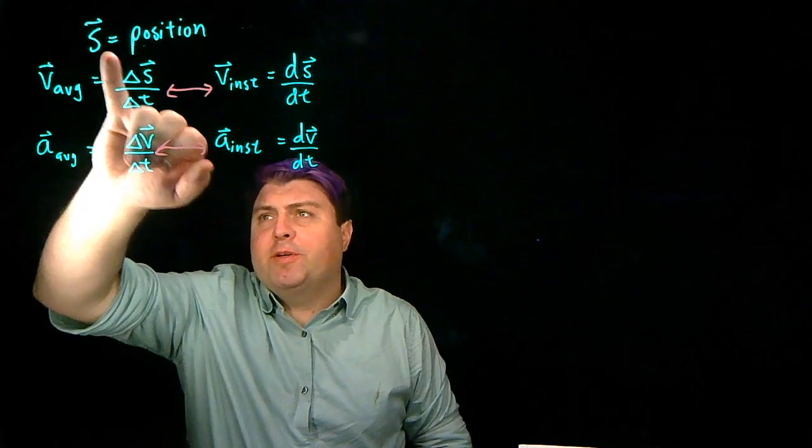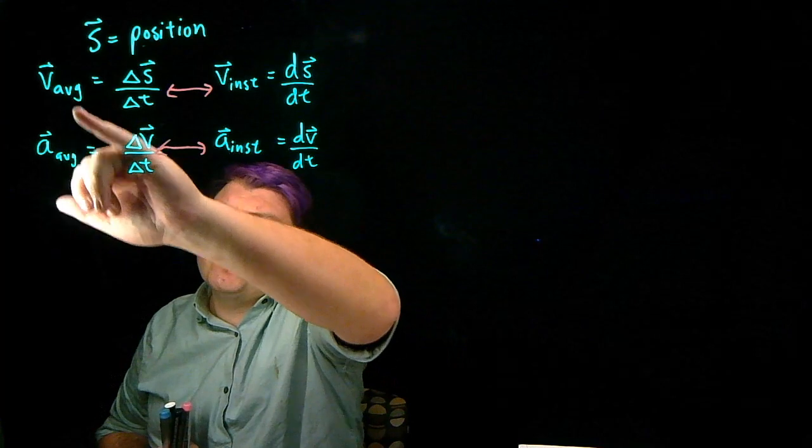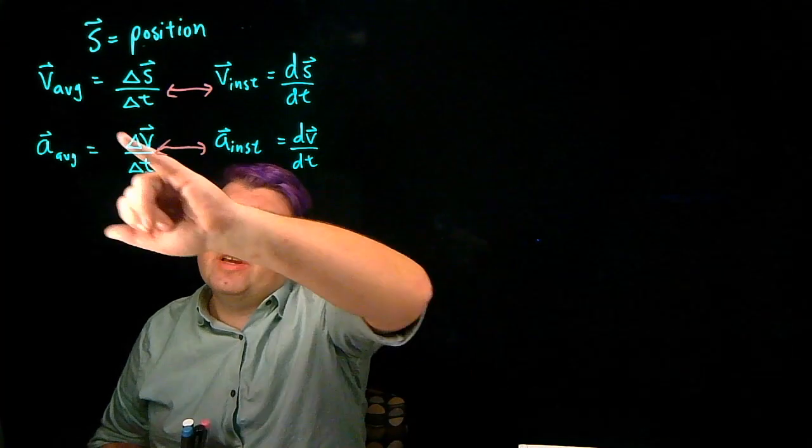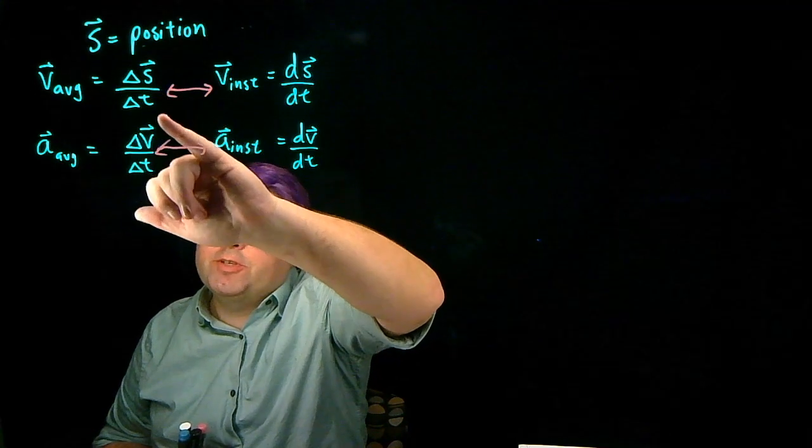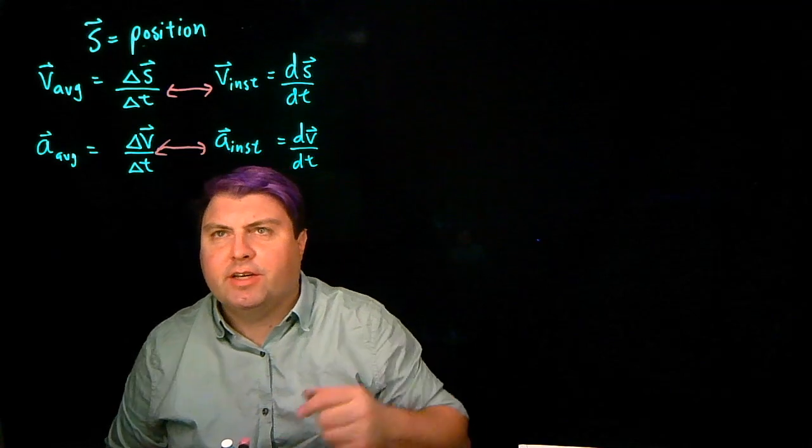In the last week we've defined position, velocity, and acceleration. We have here also our definitions of average acceleration and average velocity. In our case of average, it's the change in position over the change in time, whereas instantaneous is a derivative of position with respect to time.